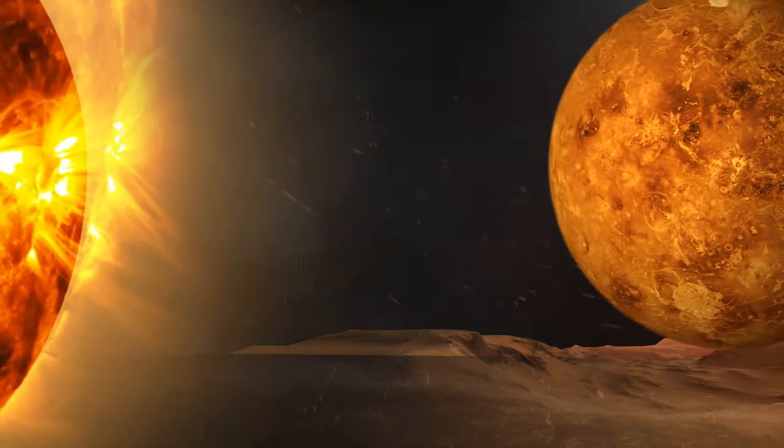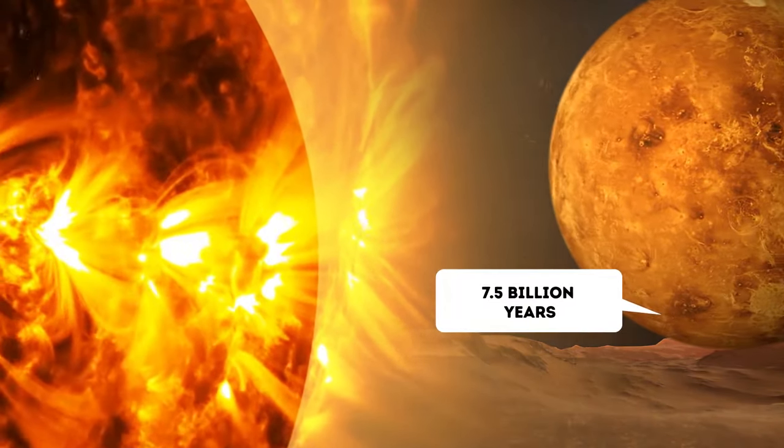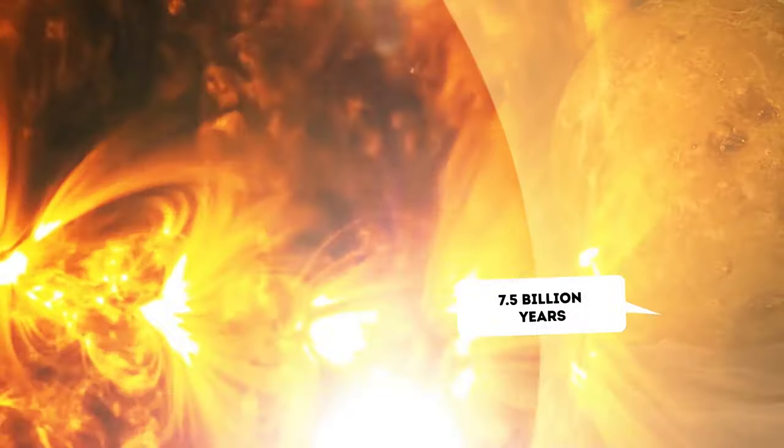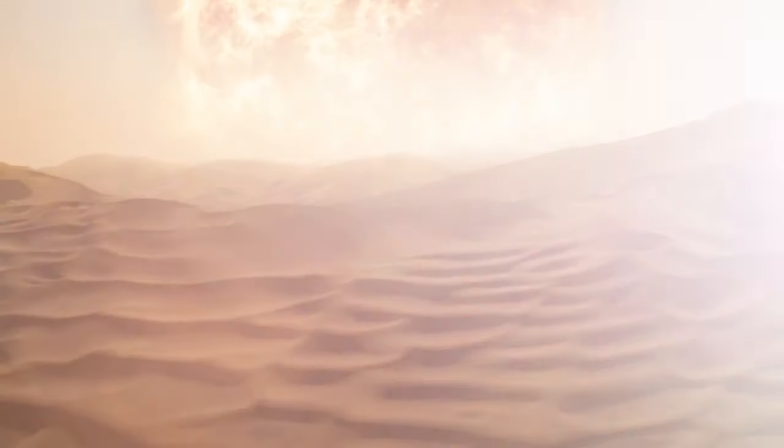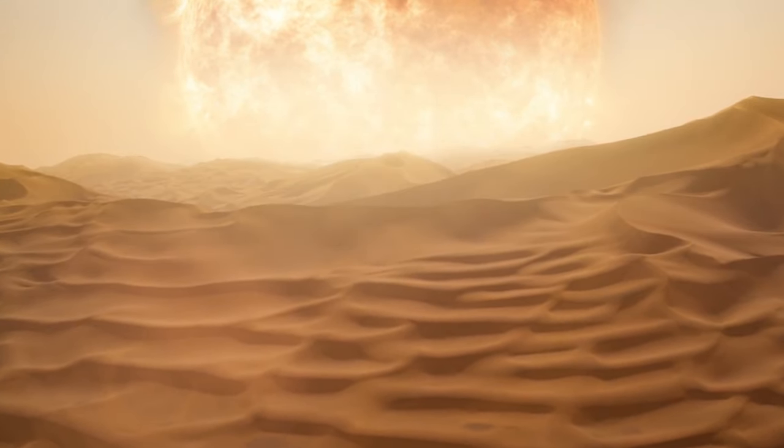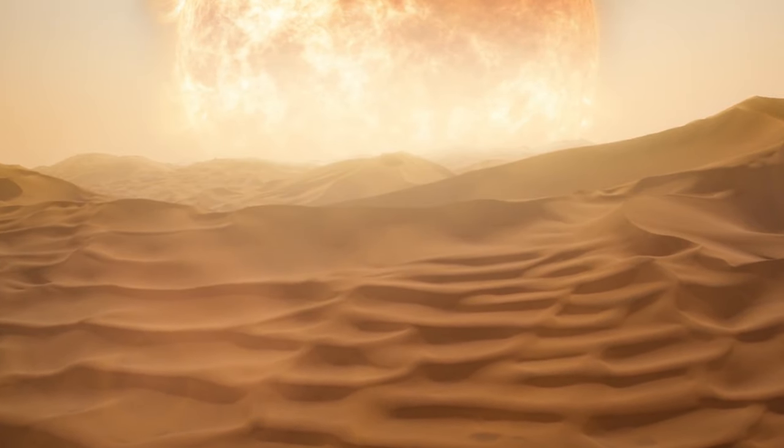And finally, the Sun will most probably absorb Earth in around 7.5 billion years. It will happen after our star enters its red giant phase and expands way beyond the current orbit of our planet.